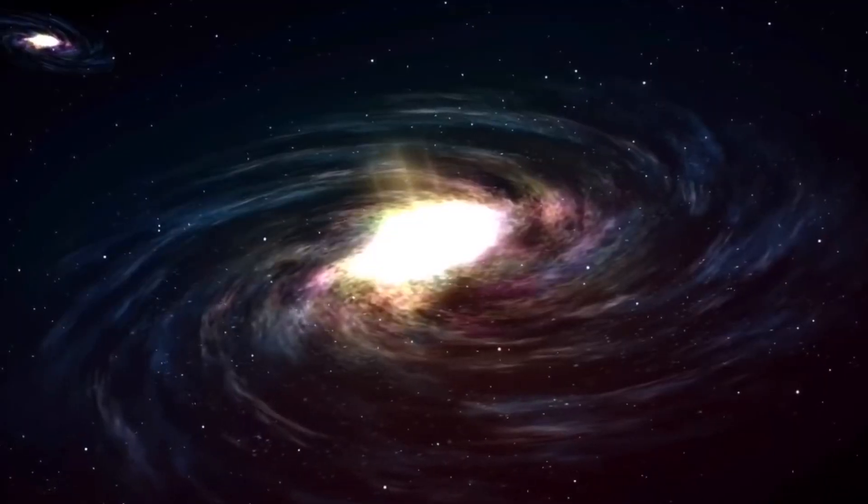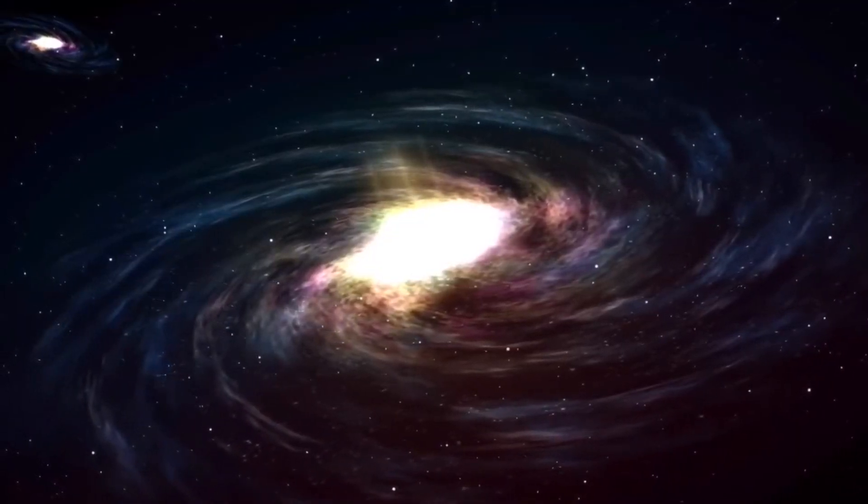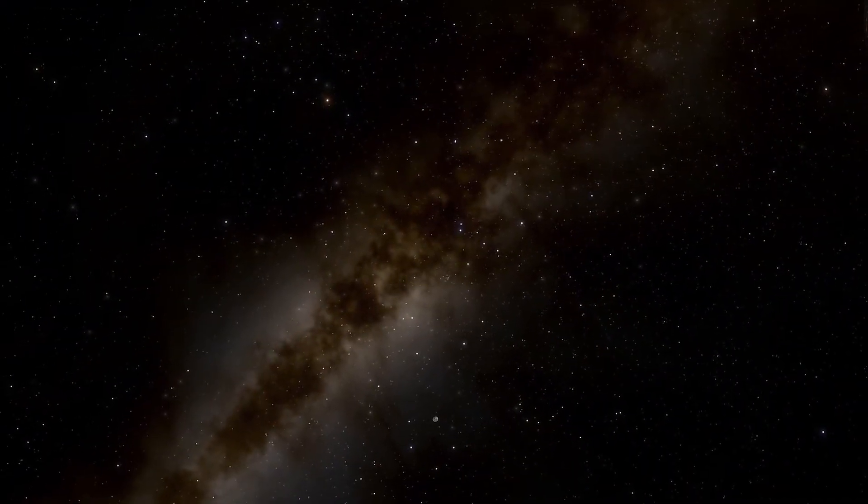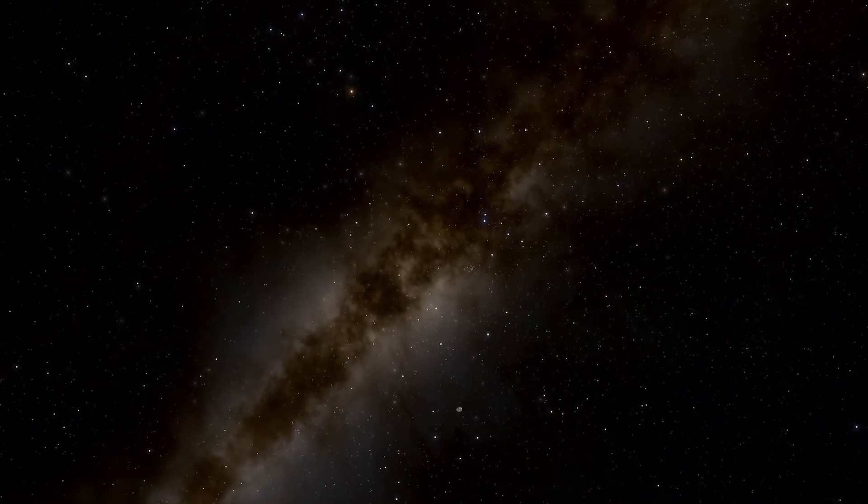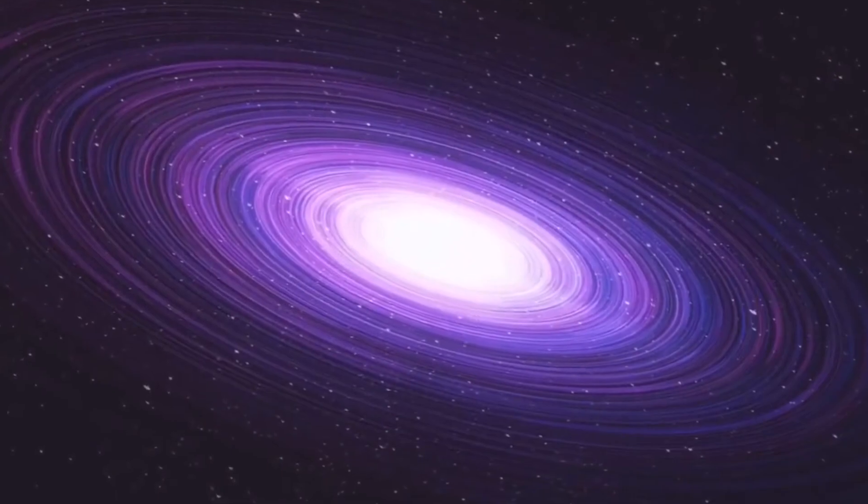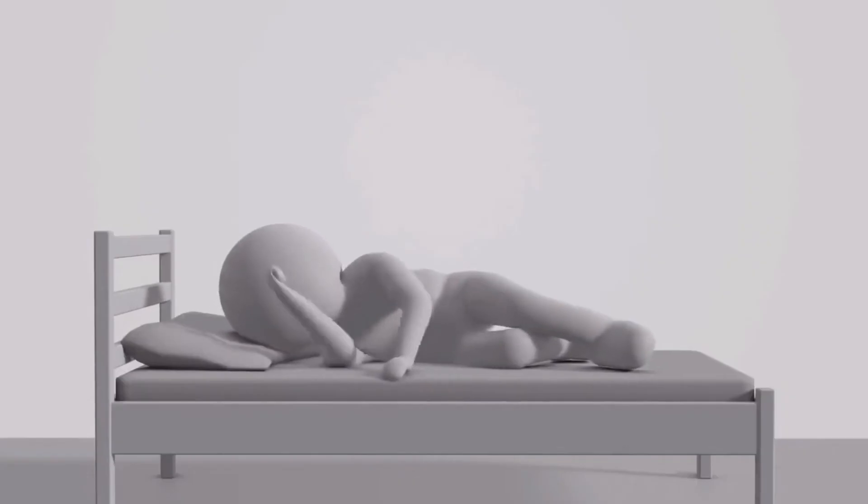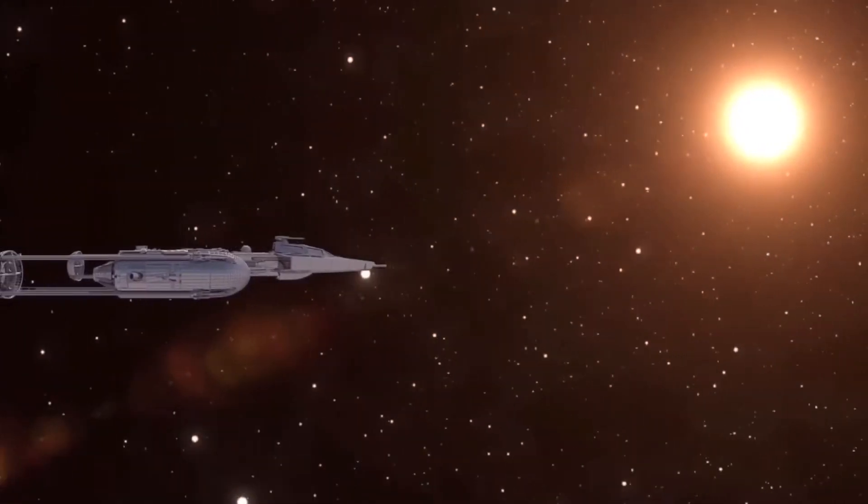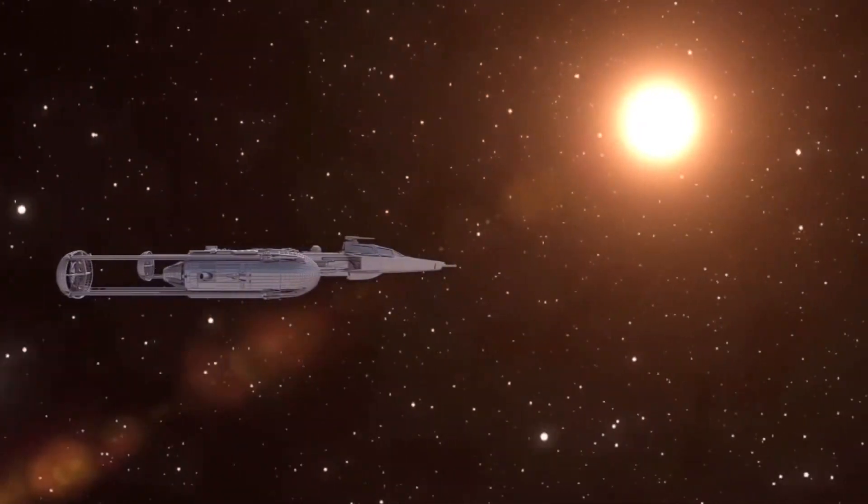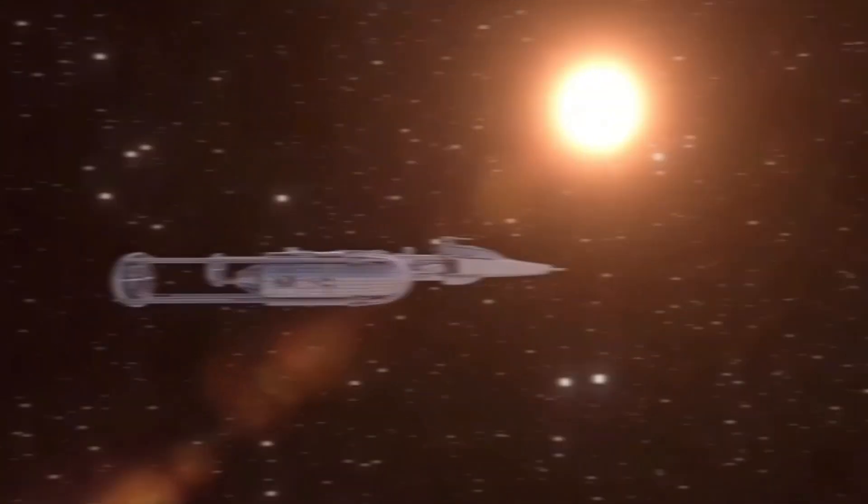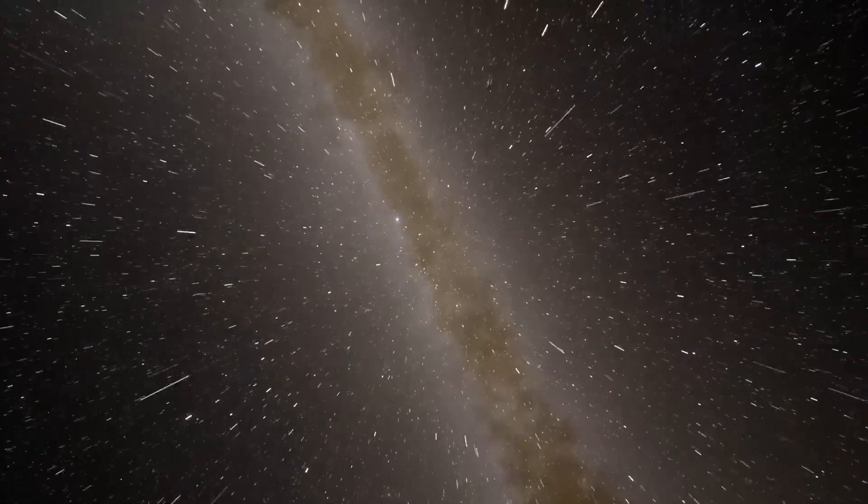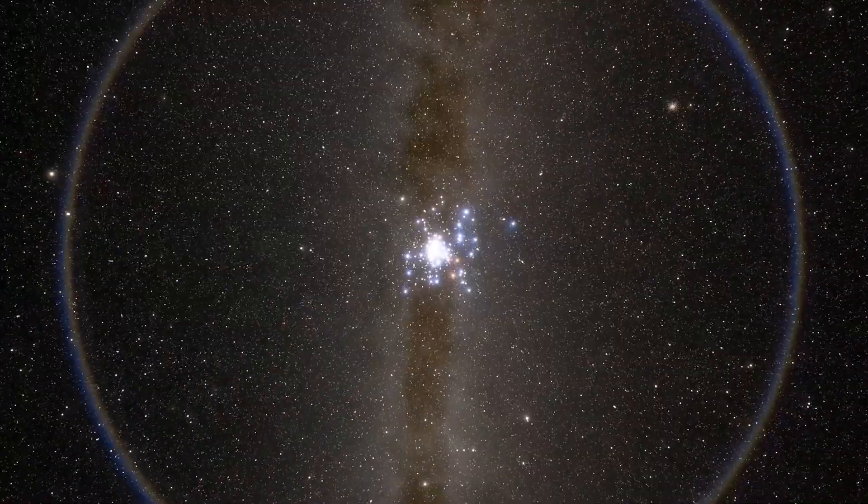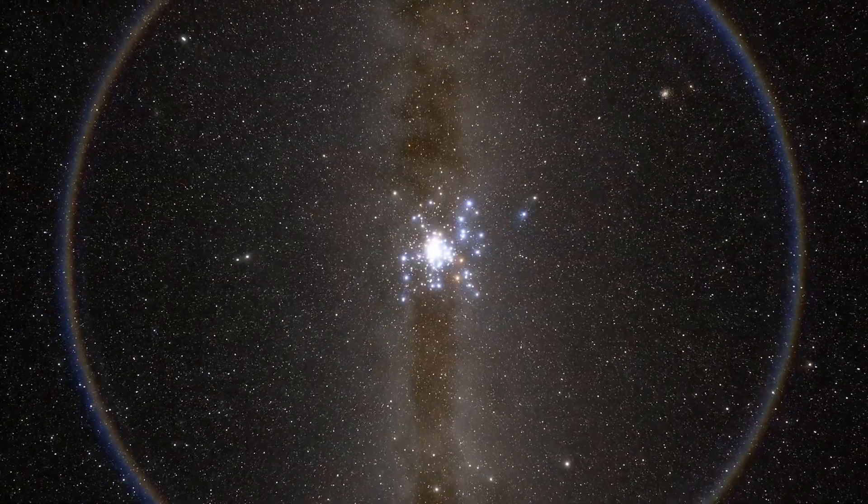The Milky Way galaxy is an immense and very interesting place. Not only does it measure some 120,000 to 180,000 light years in diameter, it is home to planet Earth, the birthplace of humanity. Our solar system resides roughly 27,000 light years away from the galactic center on the inner edge of one of the spiral-shaped concentrations of gas and dust particles called the Orion Arm.